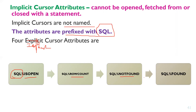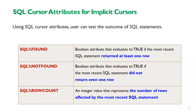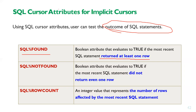The implicit cursor attributes — SQL%ISOPEN, SQL%NOTFOUND, and SQL%FOUND — are all prefixed with SQL. Using SQL cursor attributes for implicit cursors, you can test the outcome of a SQL statement. SQL%FOUND is a boolean attribute that returns true if the most recent SQL statement returned at least one row. SQL%NOTFOUND returns true if the statement did not return even one row — it is the inverse of SQL%FOUND.